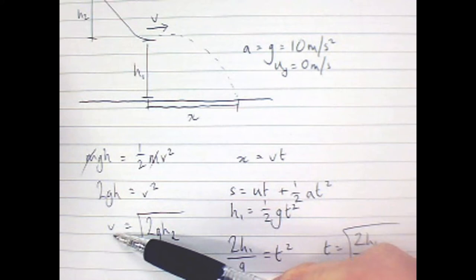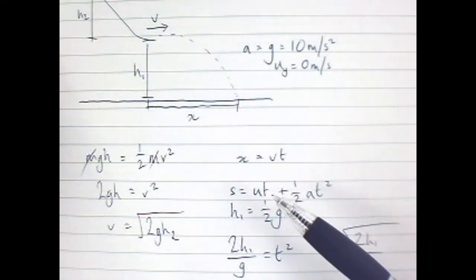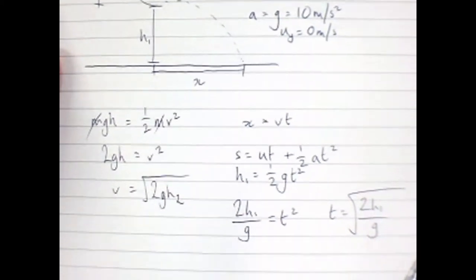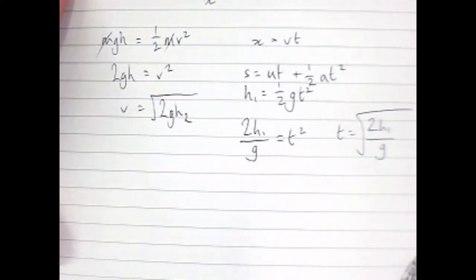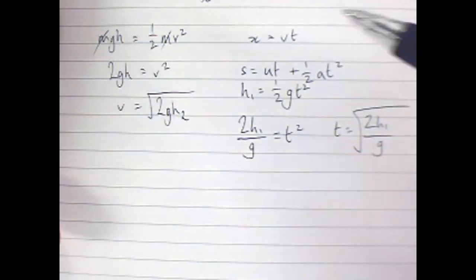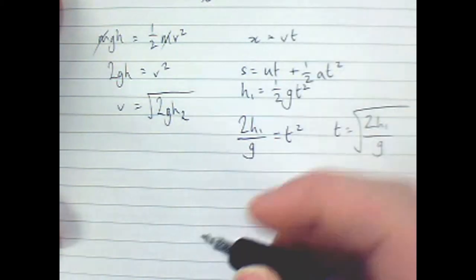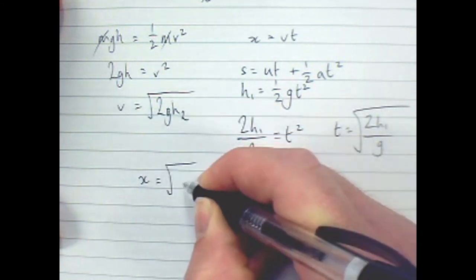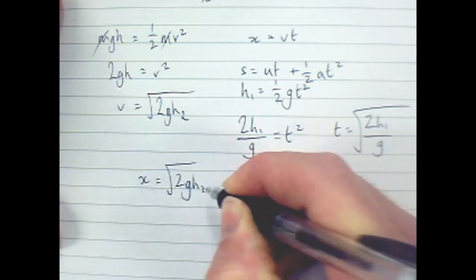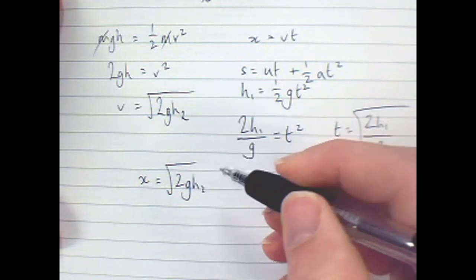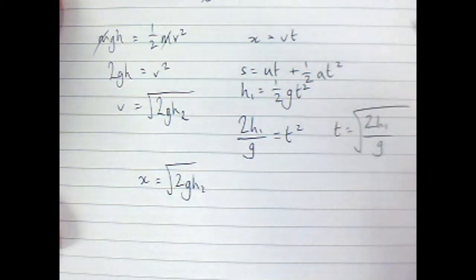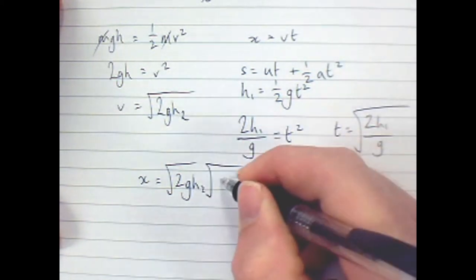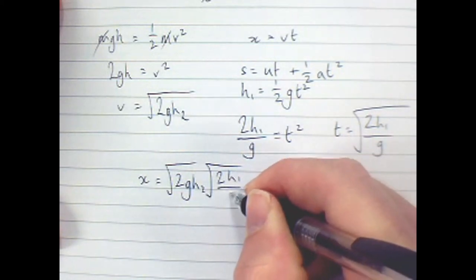Now I've got my expression for speed in the horizontal direction, my expression for time. And whenever we're dealing with projectiles, we always talk about there's no air resistance, so there's no acceleration in the horizontal direction. So I've got my expression for X here. I can just sub in V root 2GH2, and sub in my expression for time, root 2H1 over G.